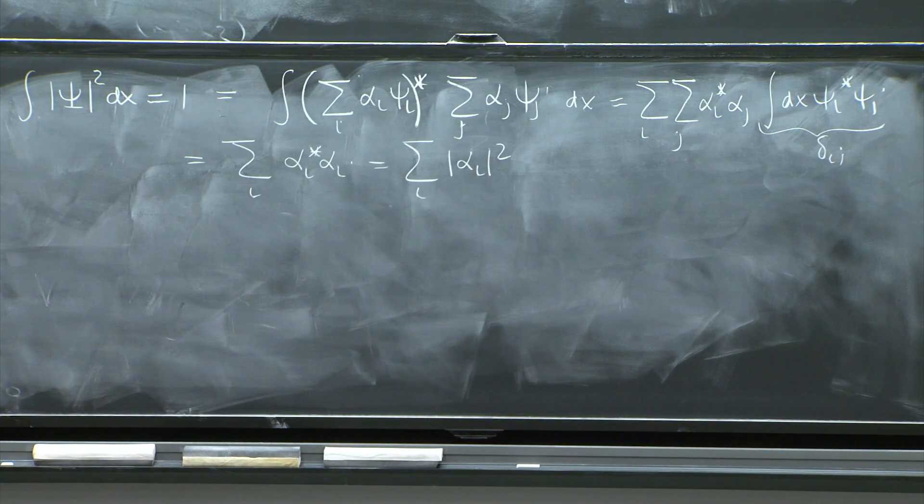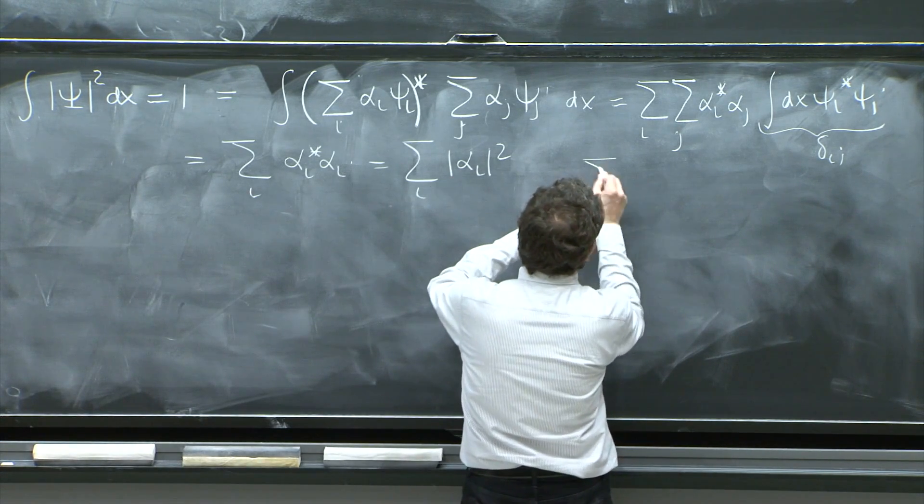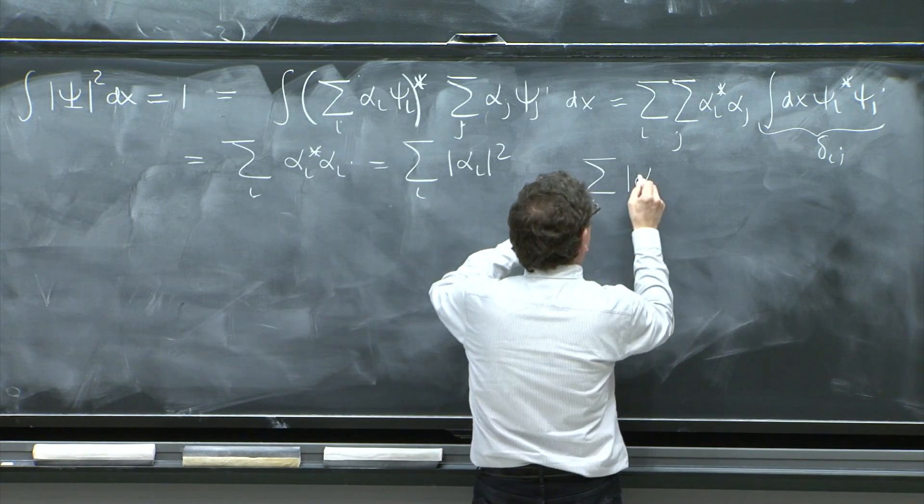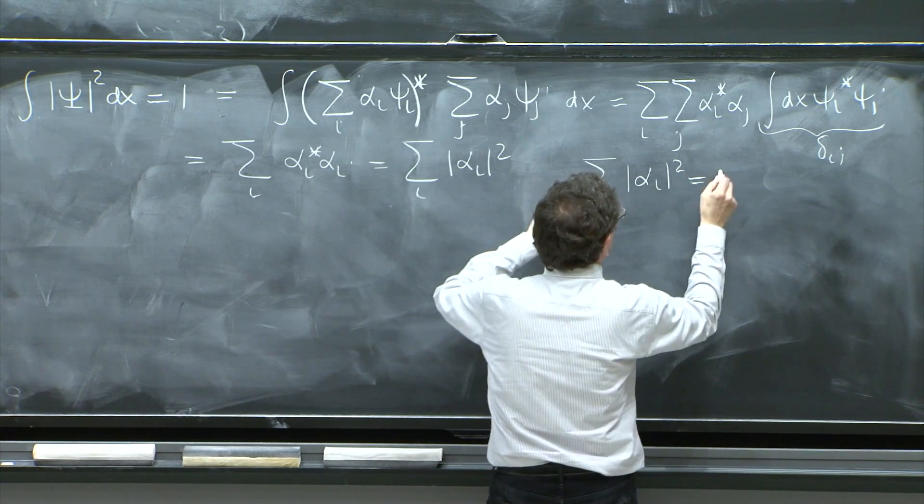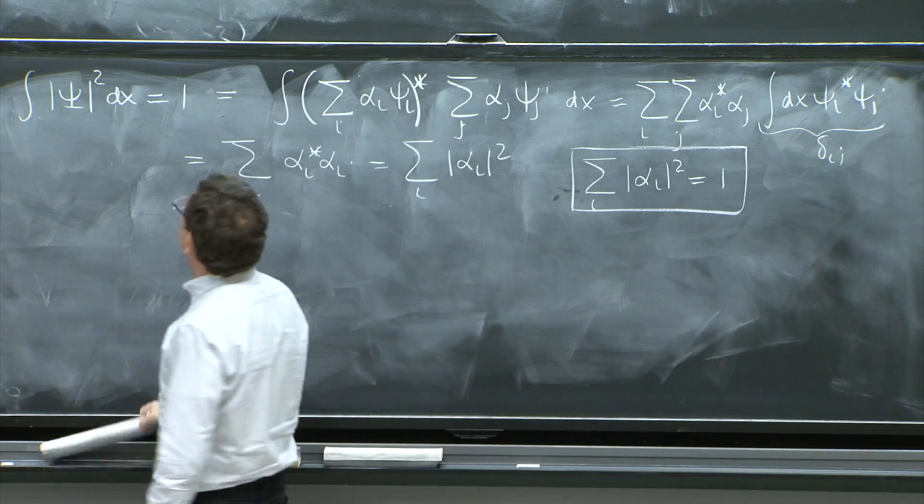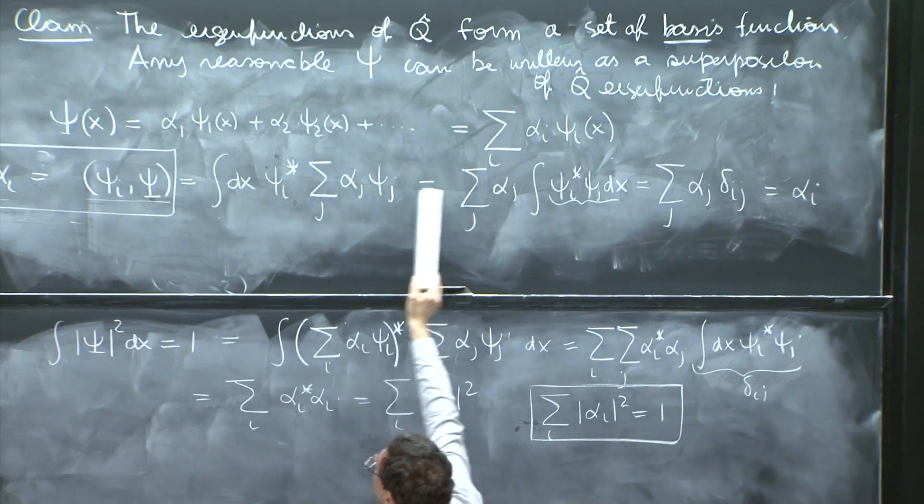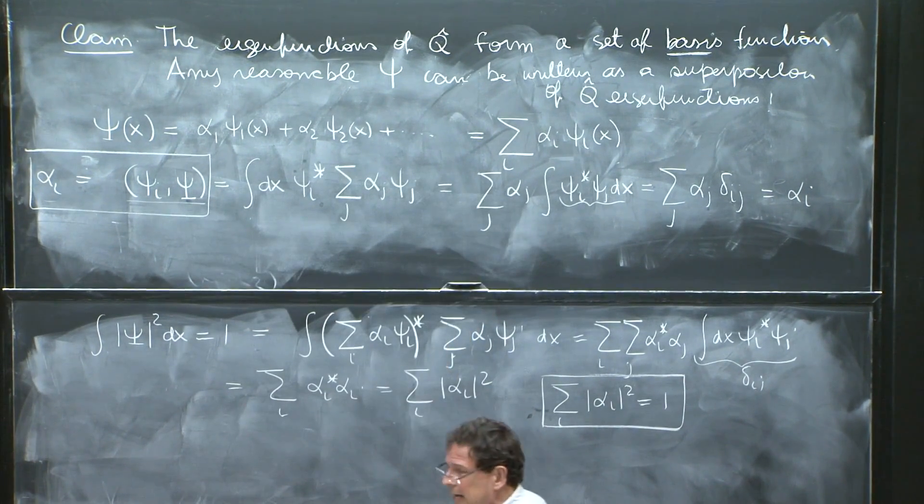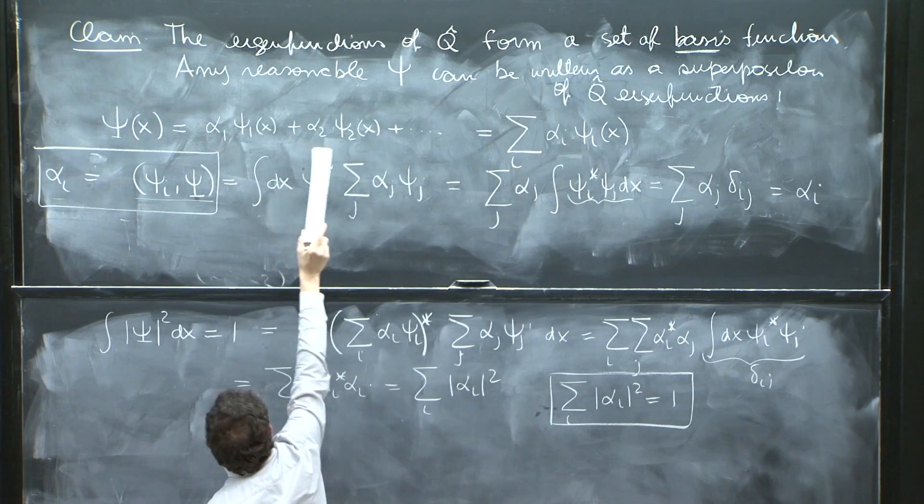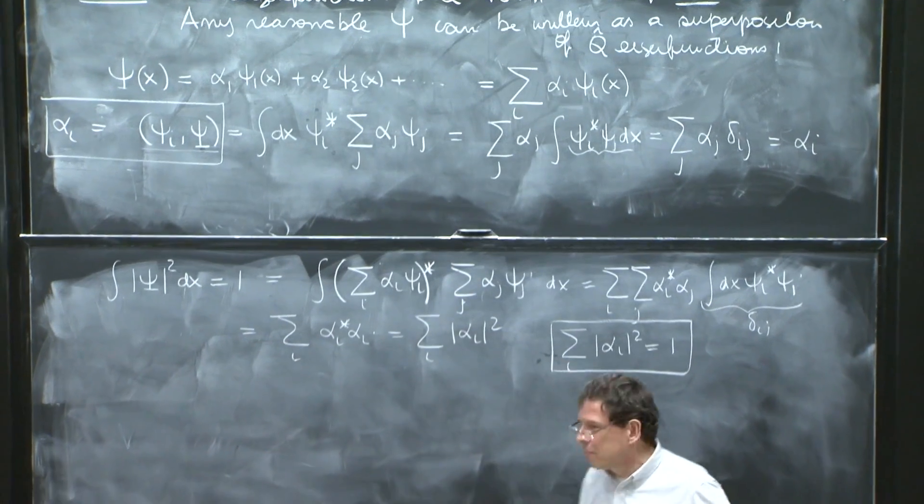So that's what it says. Look, this is something that should be internalized as well. The sum over i of the alpha i squared is equal to 1. Whenever you have a superposition of wave functions, and the whole thing is normalized, and your wave functions are orthonormal, then it's very simple.